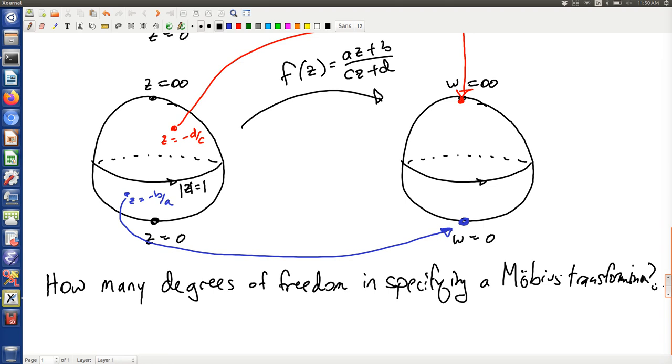How many degrees of freedom do I have? Well, I have a, b, c, and d, right? We have a, b, c, and d. That's four complex numbers. Knowing the pole and the zero, that's two complex numbers. We get one more number, and that would give us three.